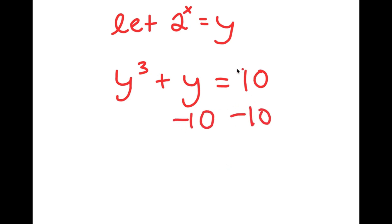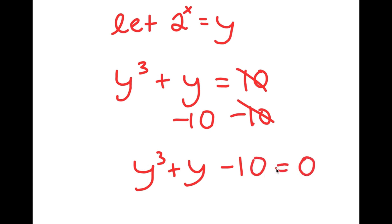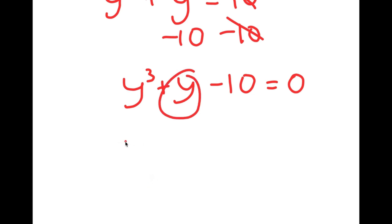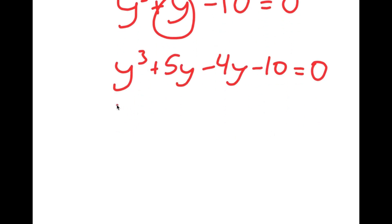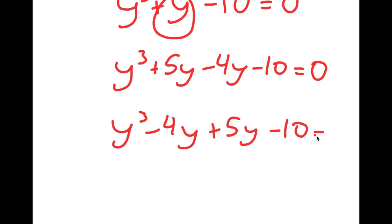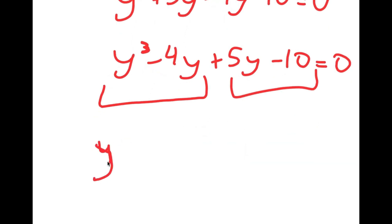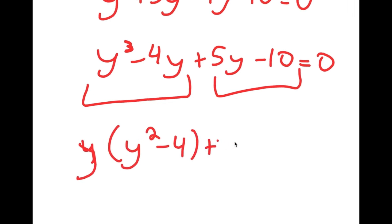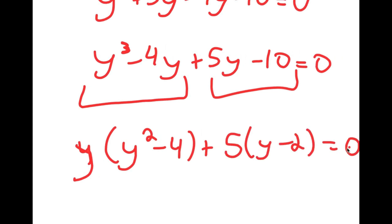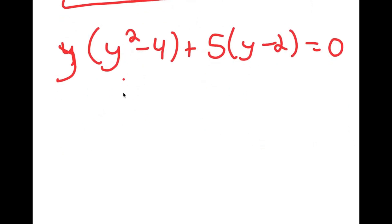If I subtract 10 on both sides, I get y cubed plus y minus 10 is equal to 0. Now I can rewrite y as 5y minus 4y, and switching the order gives me y cubed minus 4y plus 5y minus 10 is equal to 0. Factoring by grouping: from y cubed minus 4y, I factor out y to get y times y squared minus 4; from 5y minus 10, I get 5 times y minus 2. Now y squared minus 4 can be rewritten as y plus 2 times y minus 2.